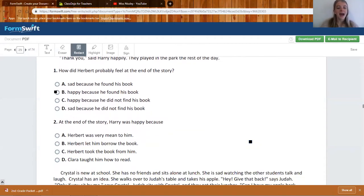Number two, at the end of the story, Harry was happy because, now Harry is the one who took the book. Was he happy because Herbert was mean to him? Was he happy because Herbert let him borrow the book? Was he happy because Herbert took the book from him, or because Clara taught him how to read? I'm sorry, my dog just opened the door. So Harry was happy because Herbert let him borrow the book.